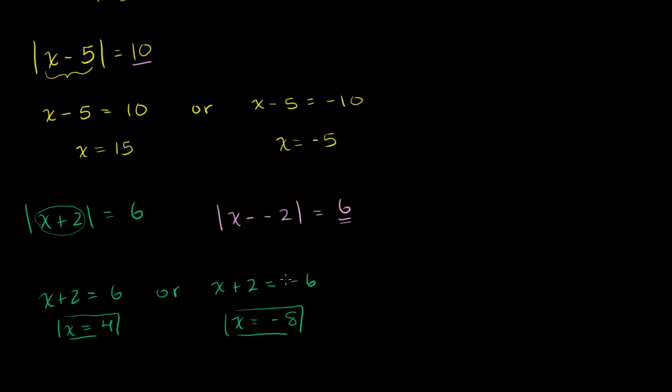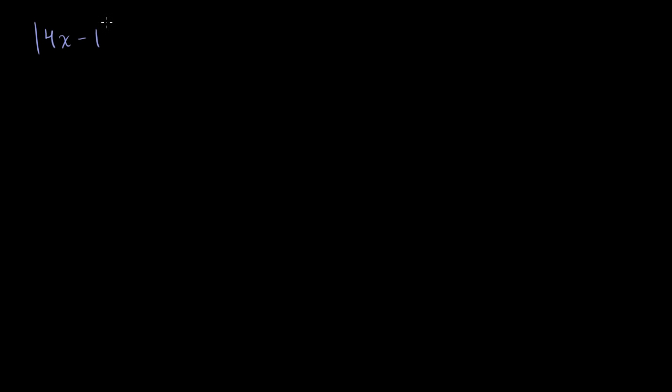Let's do another one. The absolute value of 4x minus 1 is equal to 19. Just like the last few problems, 4x minus 1 could be equal to 19. Or 4x minus 1 might evaluate to negative 19, because when you take the absolute value, you're going to get 19 again. So 4x minus 1 could be equal to negative 19.